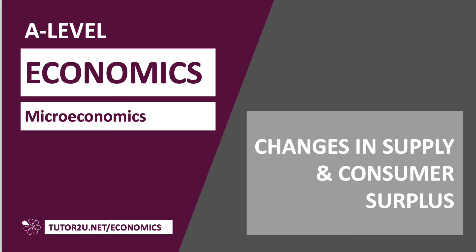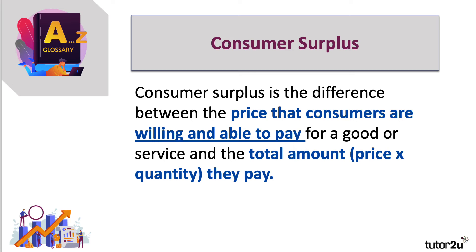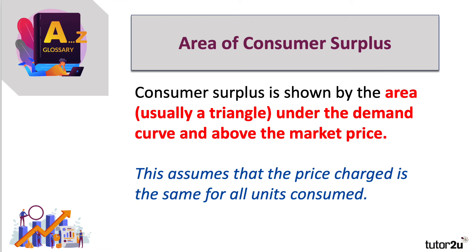Let's spend a few minutes thinking about how changes in supply can affect the level of consumer surplus. Consumer surplus, a quick reminder, is the difference between the price that consumers are willing and able to pay for a product and the total amount that they actually pay — the total amount being the price times the quantity. We show the amount of consumer surplus by the area underneath the demand curve and above the market price, assuming that the price charged is the same for all units consumed.